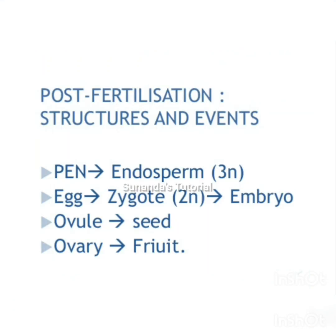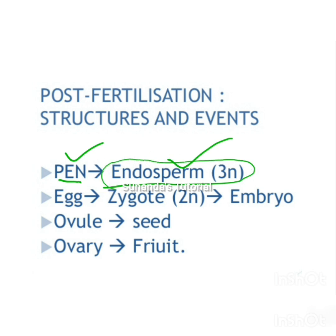One male gamete fuses with the polar nuclei or secondary nucleus to form the primary endosperm nucleus, which finally develops into the endosperm. The second male gamete fuses with the egg cell to form the zygote, which ultimately develops into the embryo. The endosperm formed is triploid in nature.